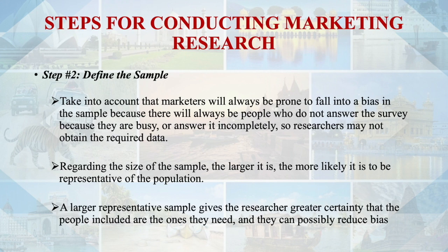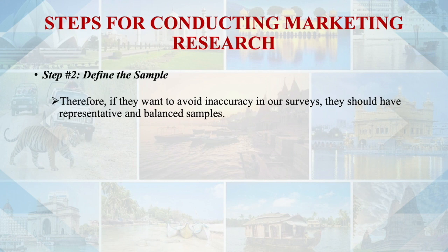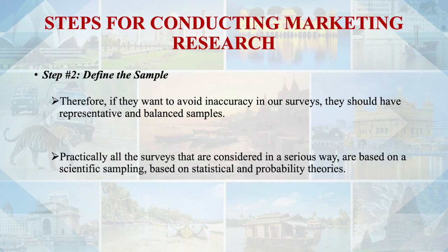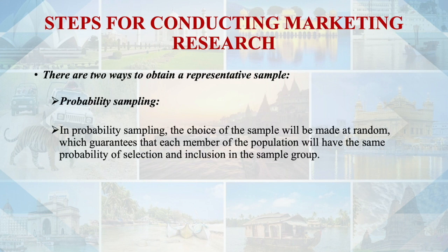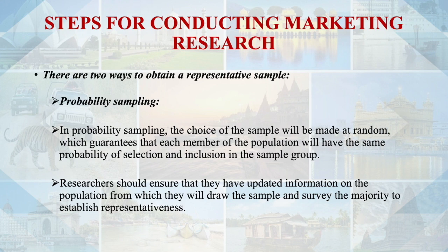A larger representative sample gives greater certainty and can reduce error. To avoid inaccuracy, surveys should have representative and balanced samples. Surveys considered in a serious way are based on scientific sampling grounded in statistical and probability theories. There are two ways to obtain a representative sample. In probability sampling, the choice of sample is made at random, guaranteeing each member of the population has the same probability of selection. Researchers should ensure they have updated information on the population.